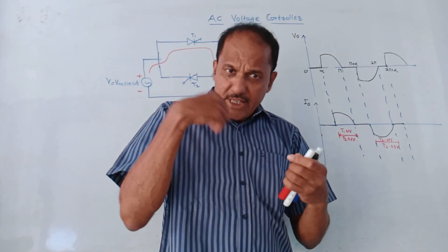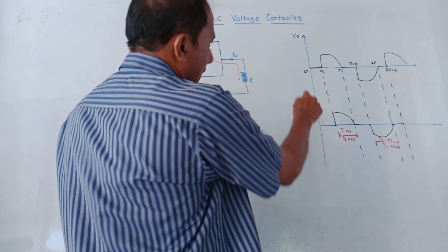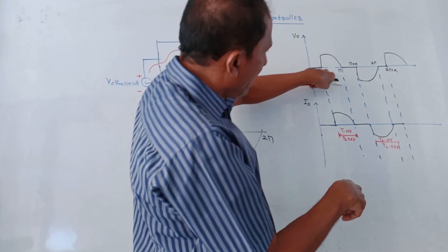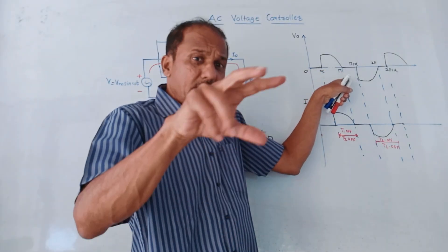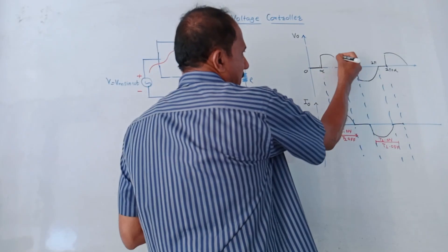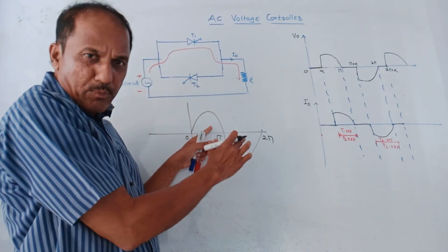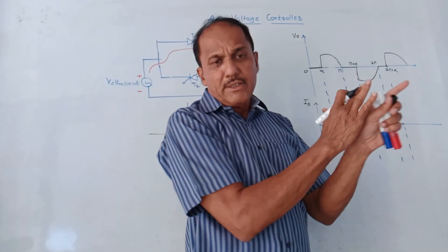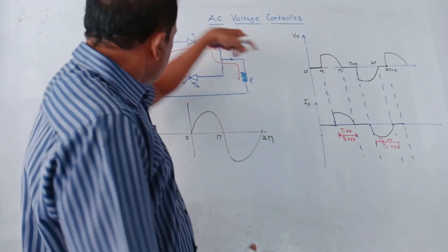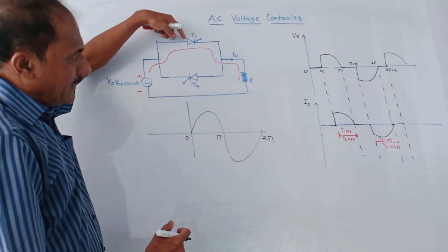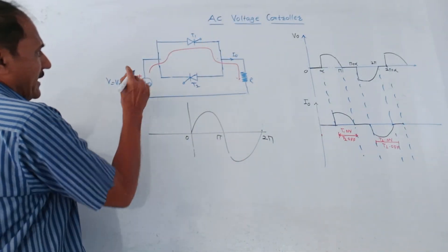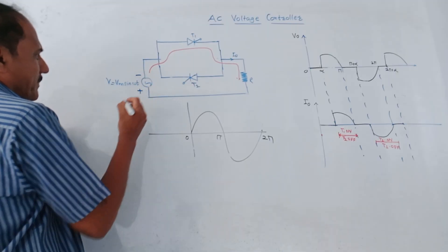T1 is turned on at firing angle alpha. The interval is zero to π, but conduction starts from alpha to π because we have set the firing angle equal to alpha. From alpha to π, the output waveform is exactly a replica of the input waveform. From zero to alpha there is no conduction; from alpha to π thyristor T1 is conducting and you get a corresponding positive waveform.